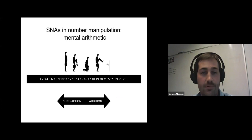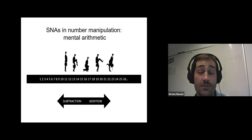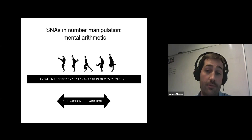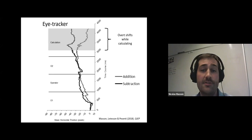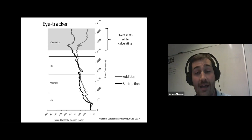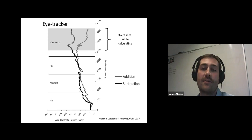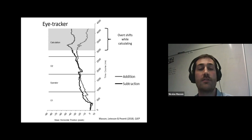The idea is quite simple. If we represent numbers spatially, then processing an addition would require shifting your attention from the representation of the first operand towards the representation of the answer, which would be on the right. For subtraction, it would mean shifting your attention from the first operand towards the smaller number on the left. We did many experiments that showed this was the case — there are attentional shifts related to arithmetic. For instance, in this study, we recorded eye movements while participants were looking at a blank screen while listening to and solving additions and subtractions. What you can see is that the eye shifts more to the right while solving an addition than while solving a subtraction.